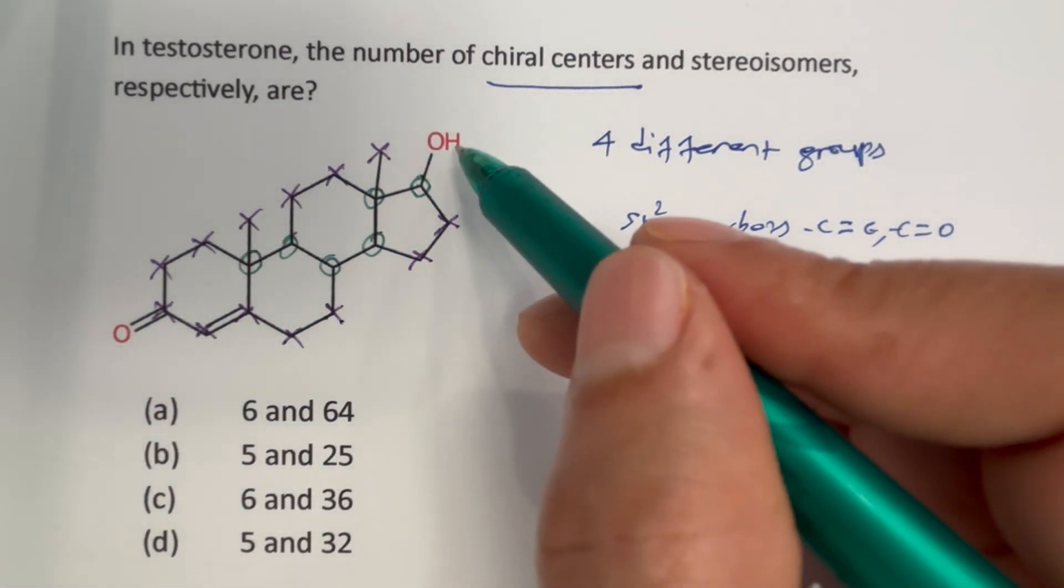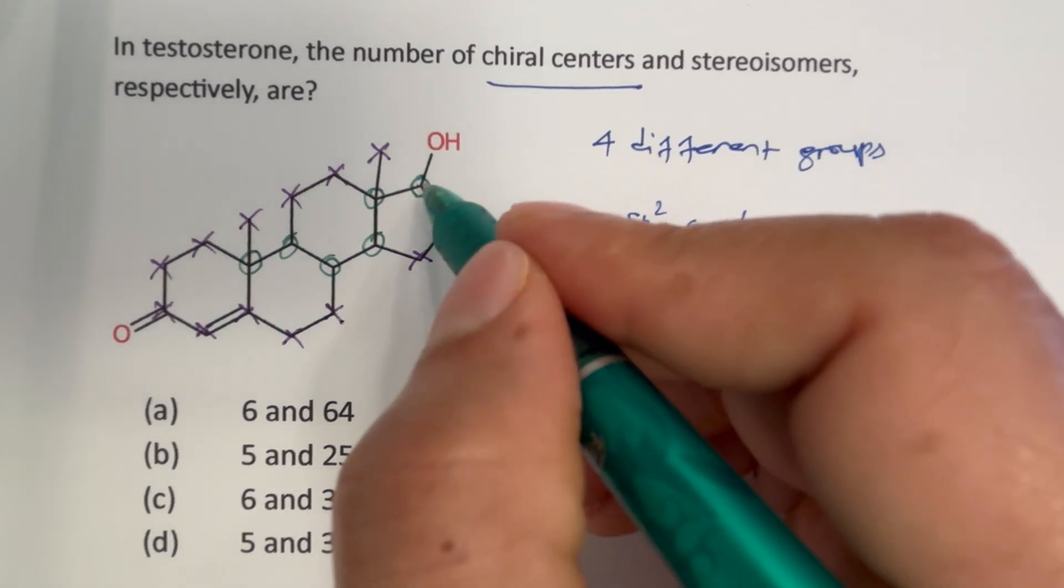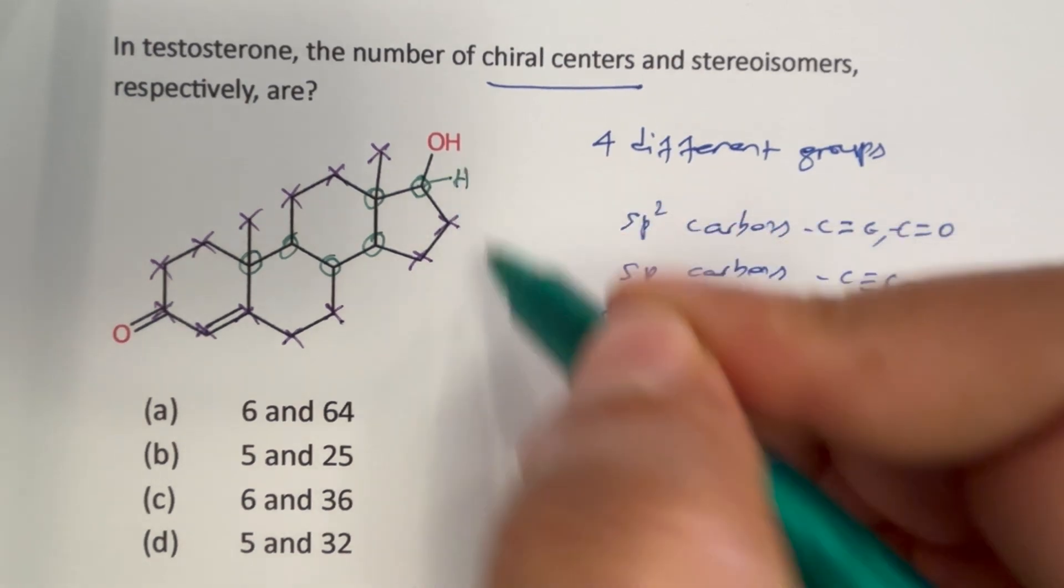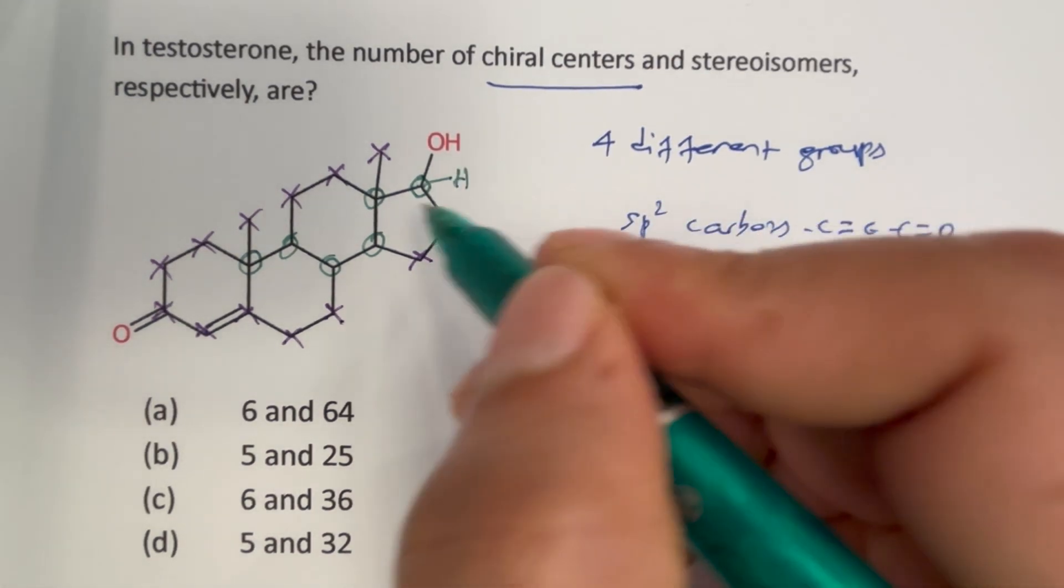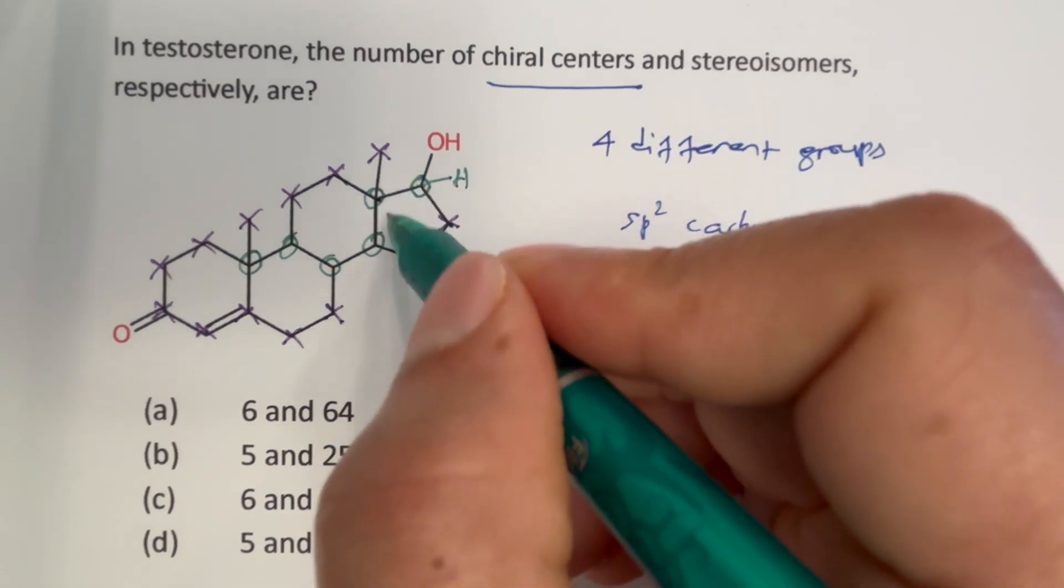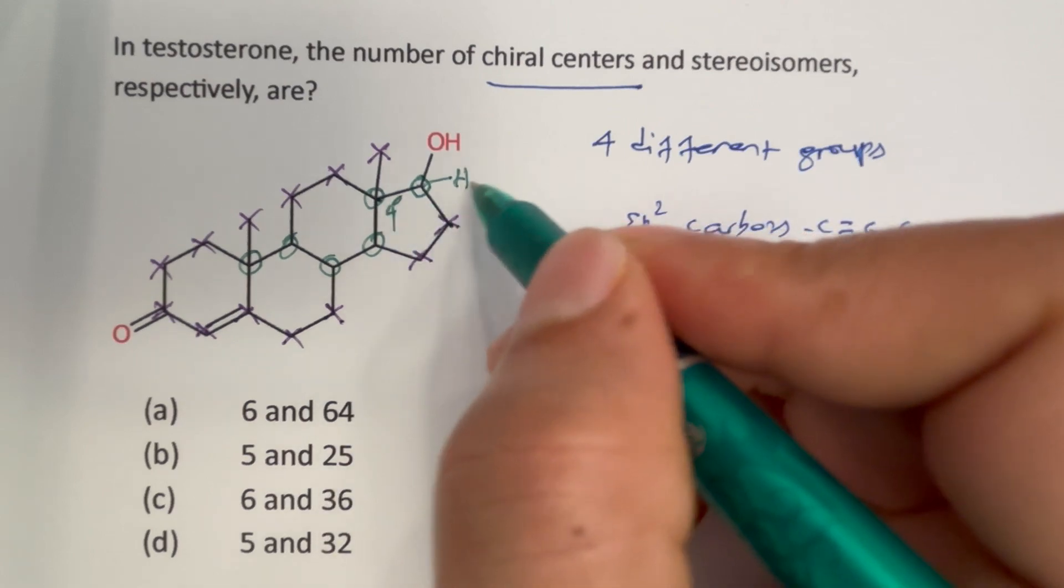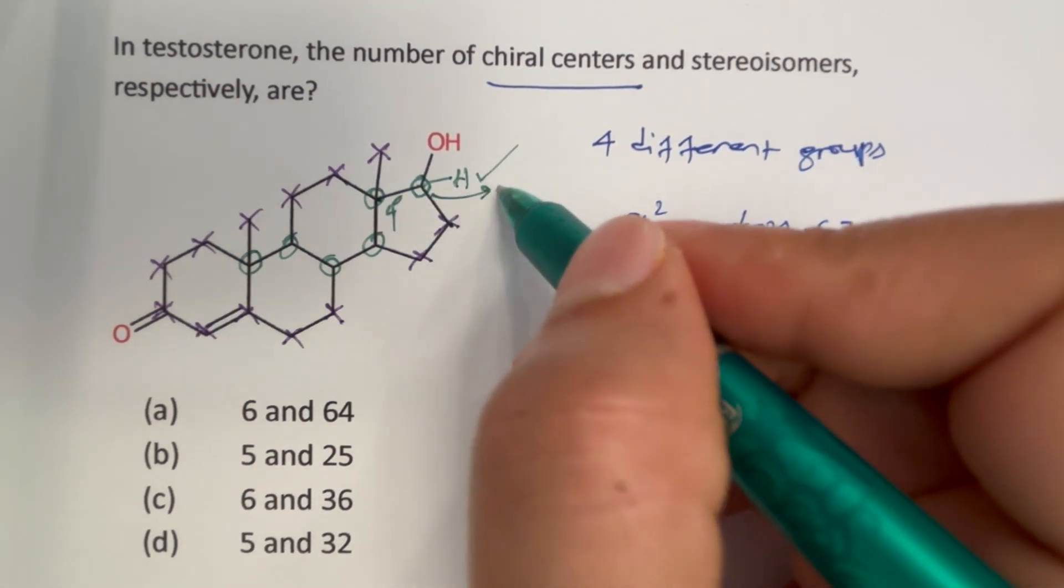Let us cross check it. We have an alcohol functional group here, and then there is a hidden hydrogen. On this side, we have CH2. On the other side, we have quaternary carbon here, four degree carbon. And therefore, this is indeed chiral. This carbon atom is indeed chiral.